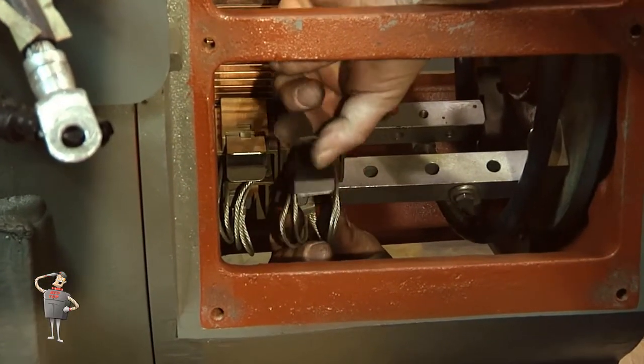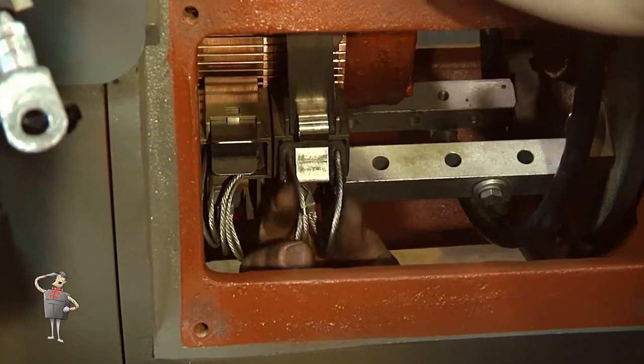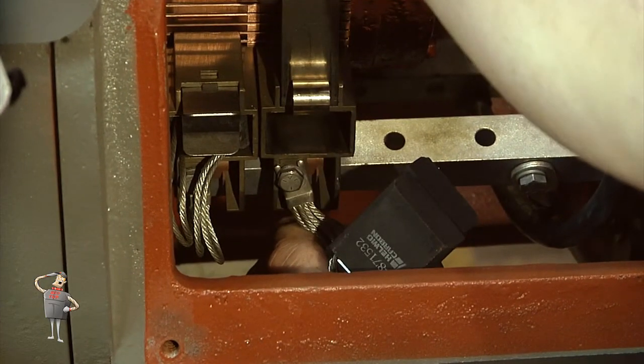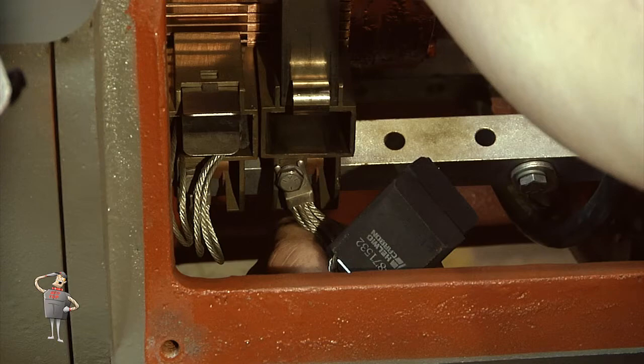As you do, take note of unusual conditions including a burned brush face, frayed shunts, and shining rail marks on the sides of the brush.